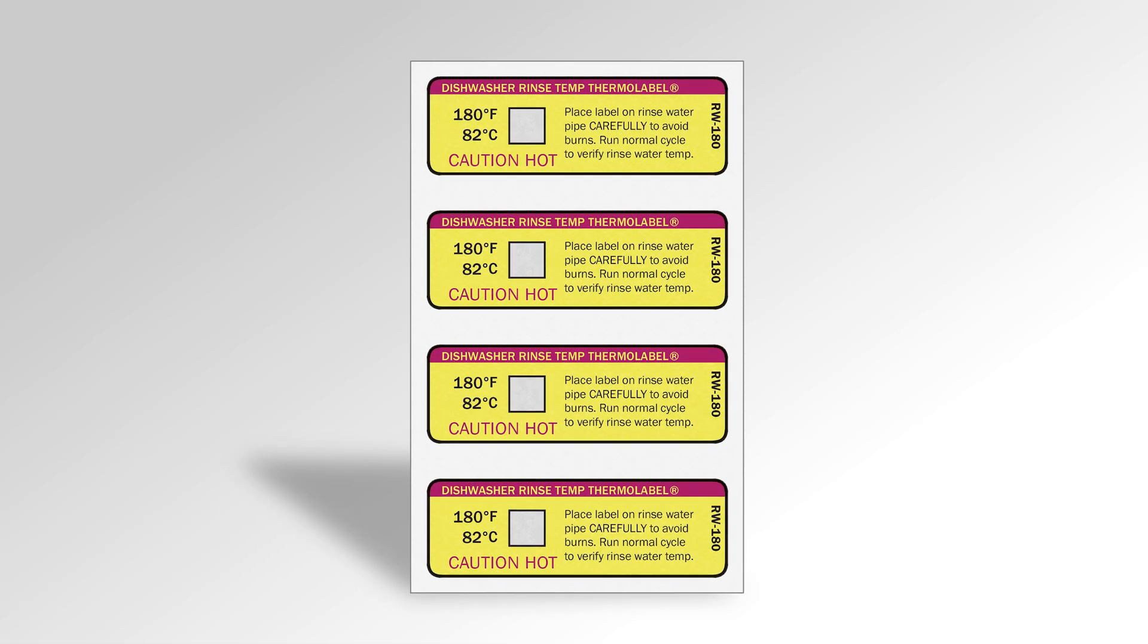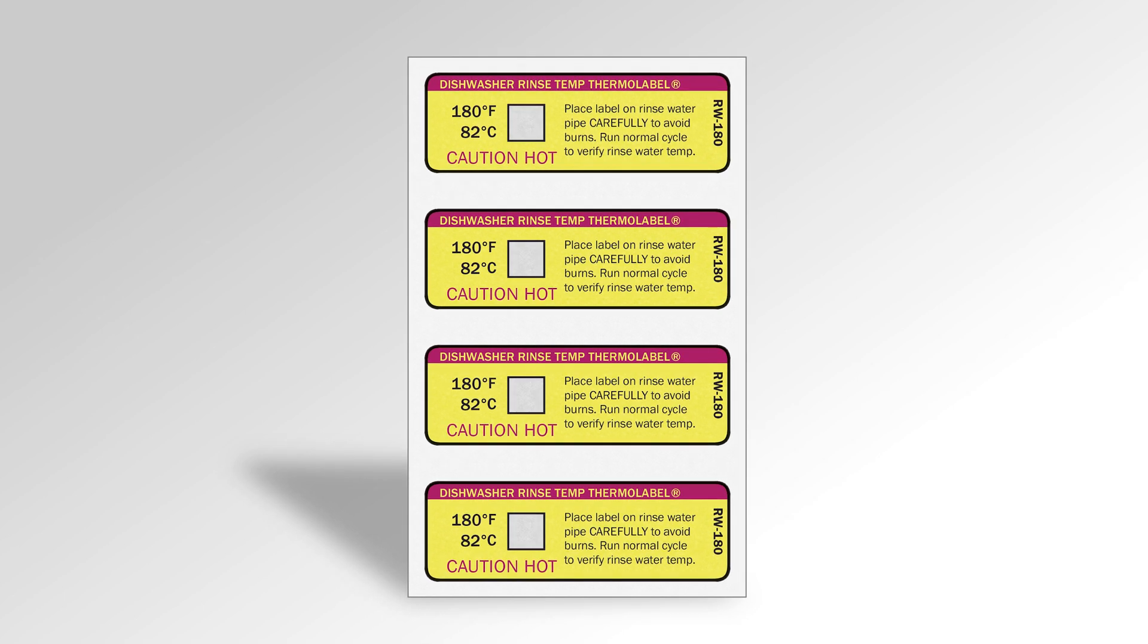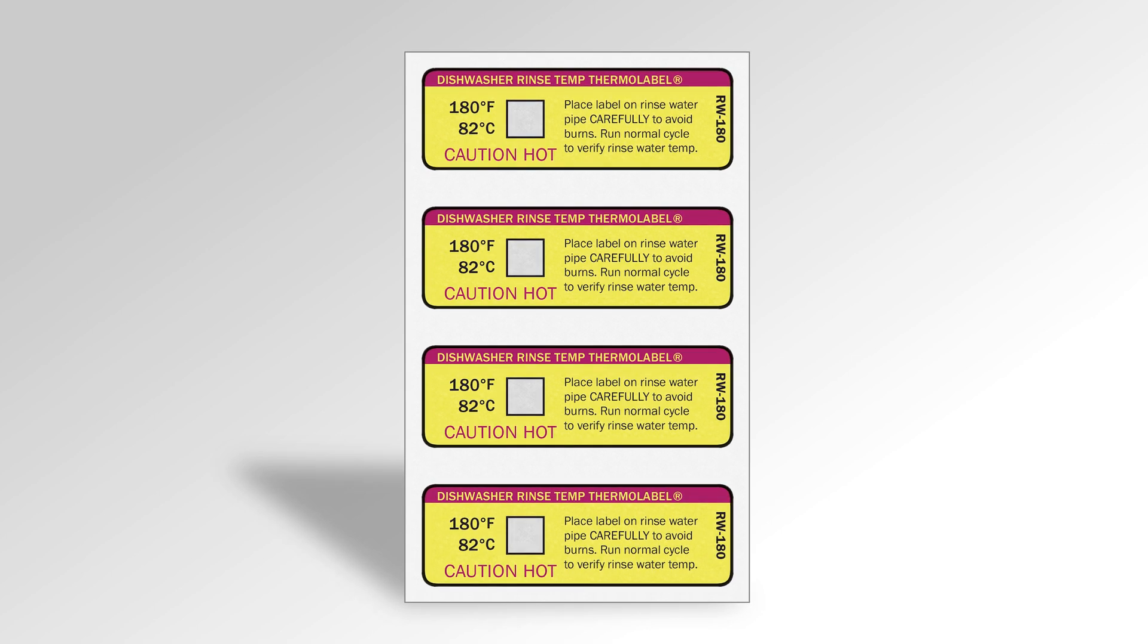Paper Thermometer's Dishwasher Rinse Temp Thermolabel, RW180, allows the user to accurately verify that the dish machine's final rinse water temperature is reaching the needed 180 degrees.